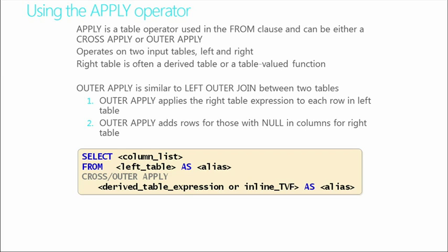We then introduced the apply operator, which is an operator used in the from clause. It can be either cross-apply or outer-apply. Outer-apply applies the right table expression for each row in the left table, and also adds rows for those with null columns for a right table. We can select columns from the left table and give them an alias name, and we can do a cross or outer-apply, then use one of those derived table expressions or in-line expressions we talked about earlier.